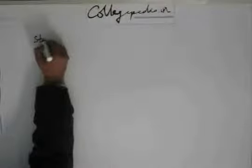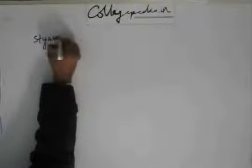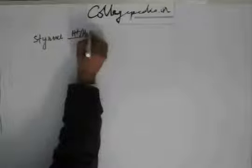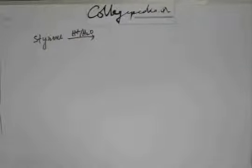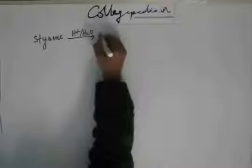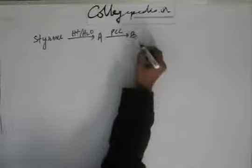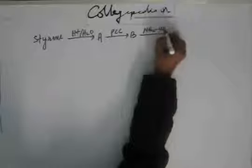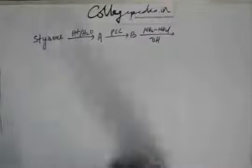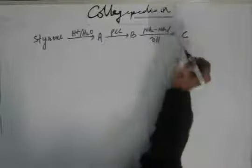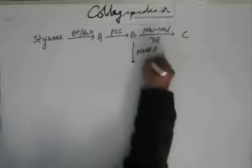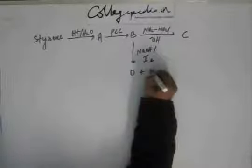I began with styrene. On this styrene I am adding H plus H2O, and you know by this time what is H plus H2O. H plus H2O is the reagent for carrying out hydration or hydrolysis. We get A. On A I add PCC, we get B. On B if we are adding NH2 NH2 in a basic medium, which reaction is this by the way, you are getting C. On B, if we add NaOH and iodine we get D plus E.